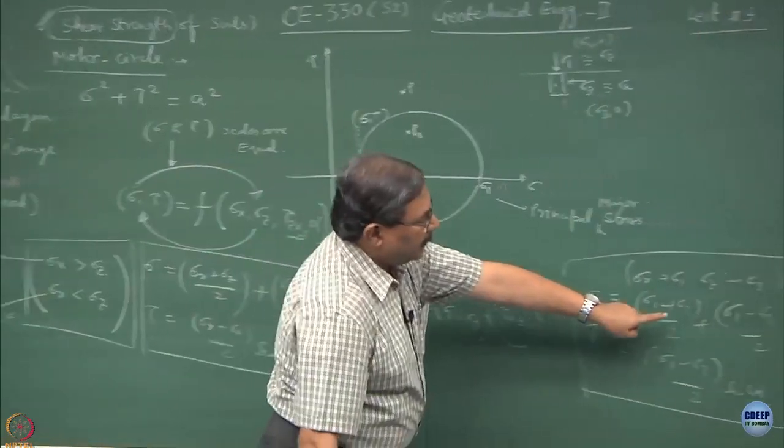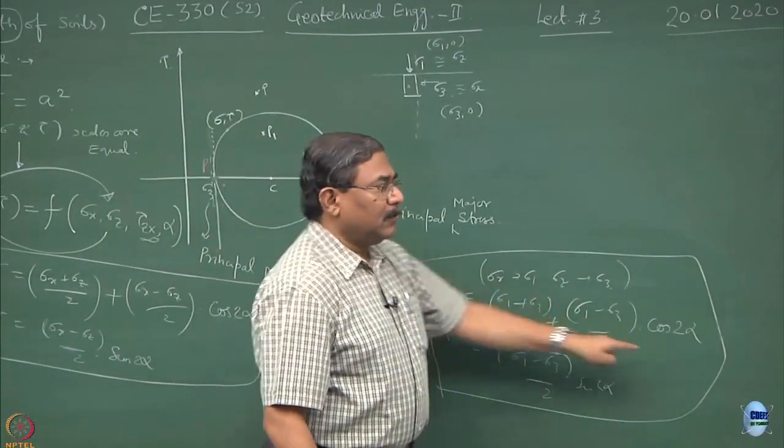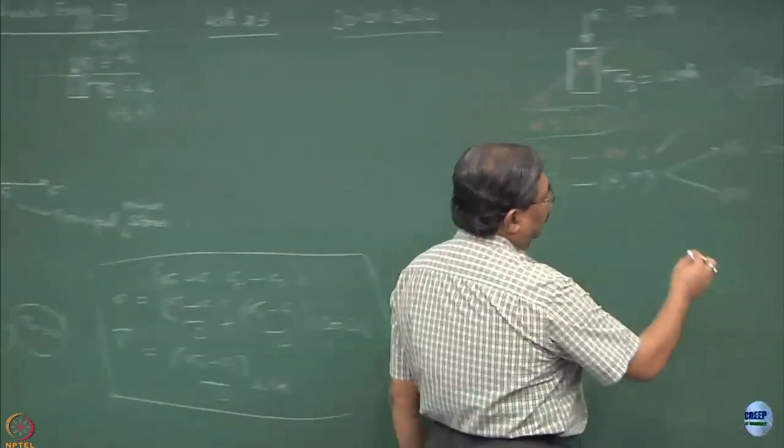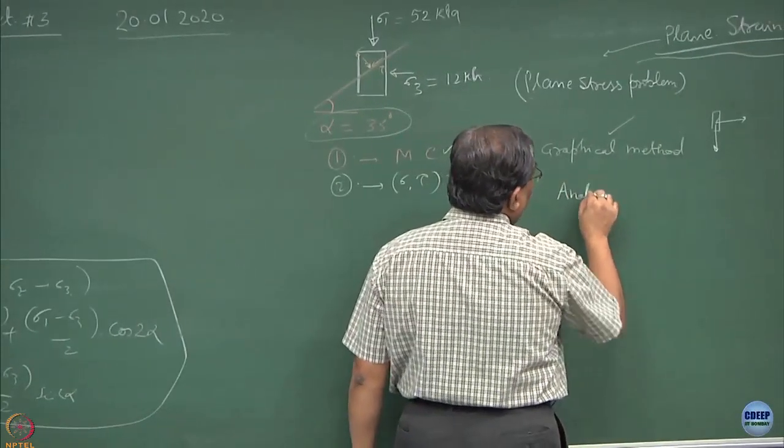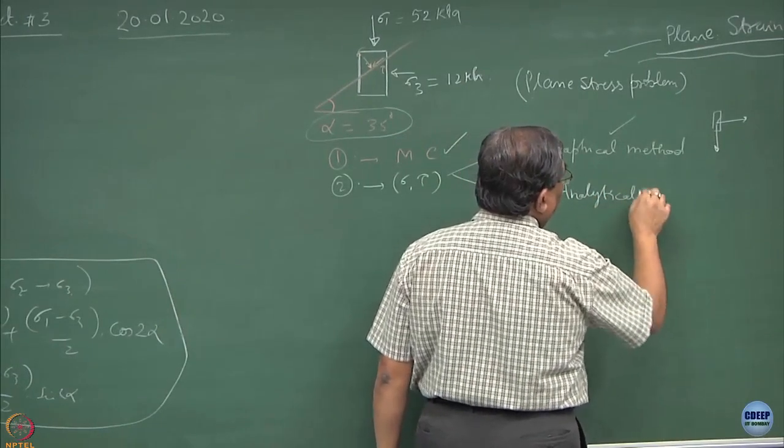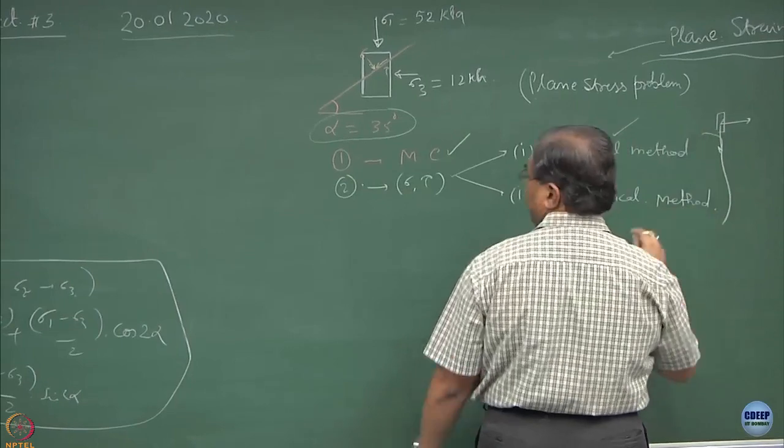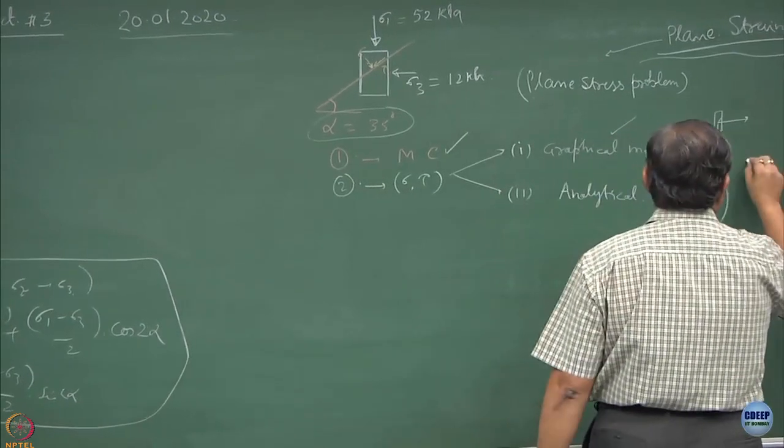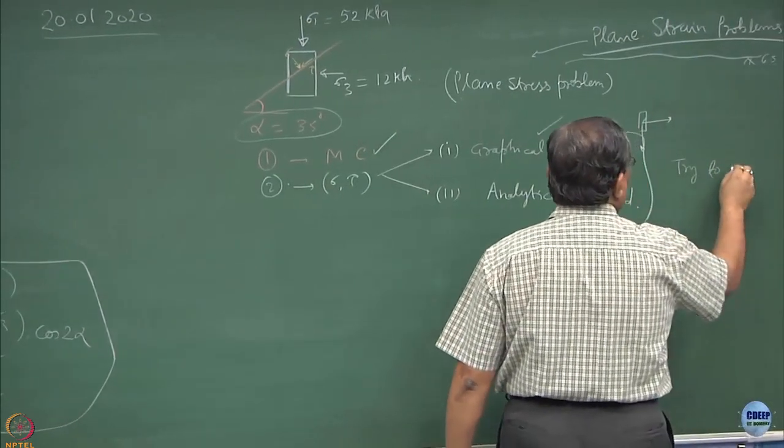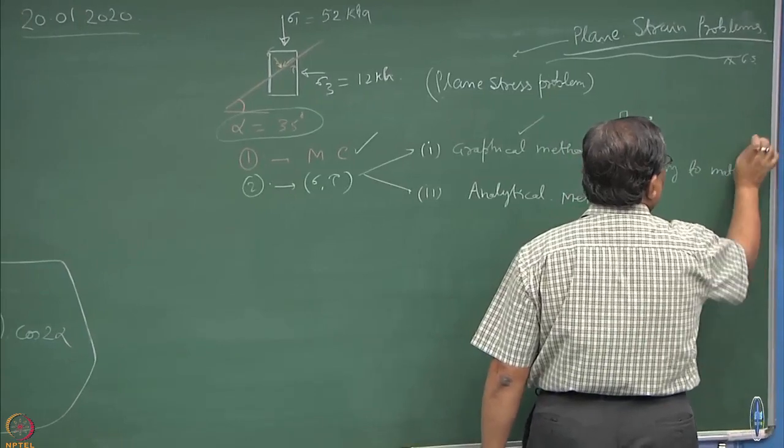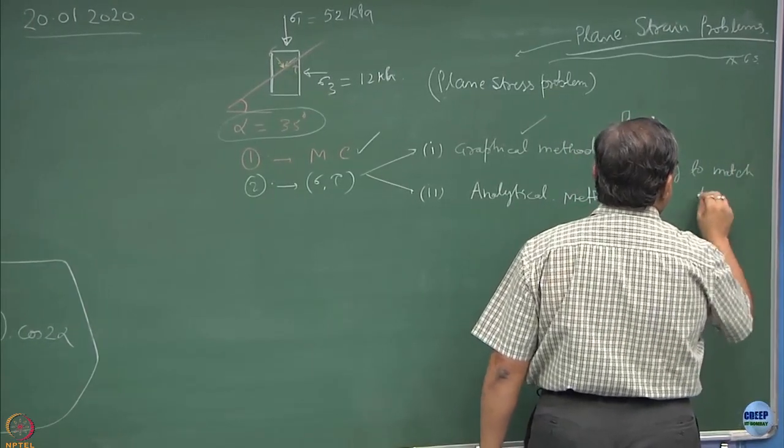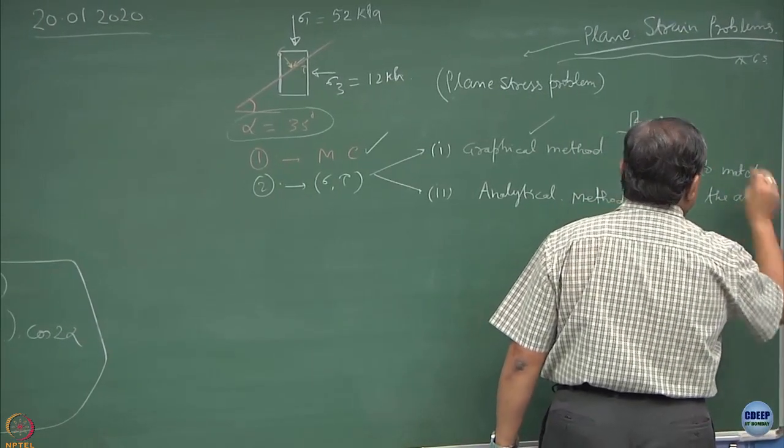So this is analytical solution. Sigma 1 is known, sigma 3 is known, alpha is known, sigma tau is known. So if you do the analytical method, which is nothing but your equations, try to match the answers and see whether you get the same answer or not.